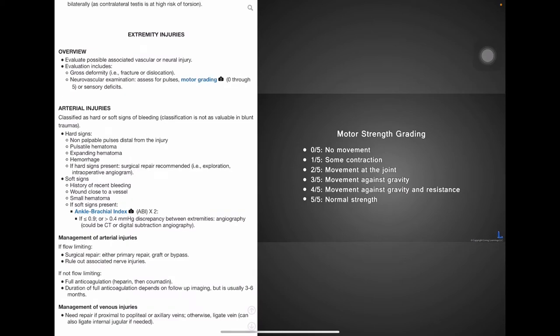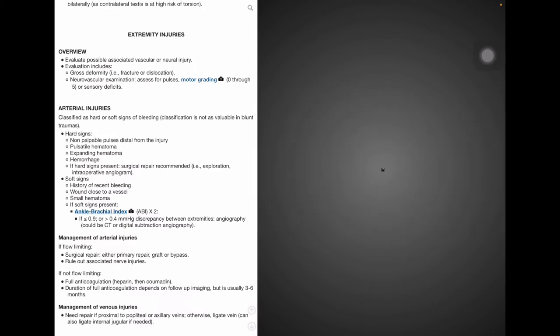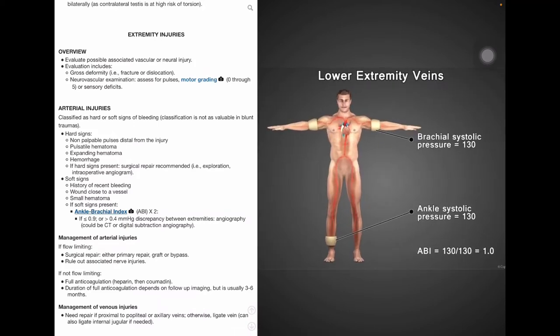And if we click this motor grading on the neurovascular exam, we can see that the grading of motor strength is on a scale of zero to five going from no movement at zero and then at a level five is normal strength. And then we also have the ankle brachial index. These are used if soft signs are present like a small hematoma or a history of recent bleed, brachial systolic pressure, the ankle systolic pressure, and then we have this equation for the ankle brachial index.